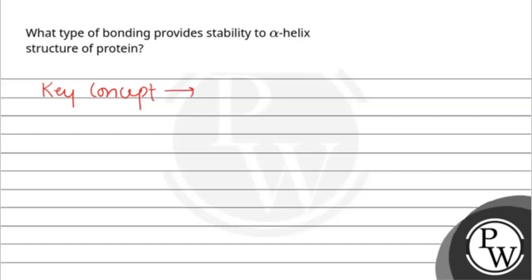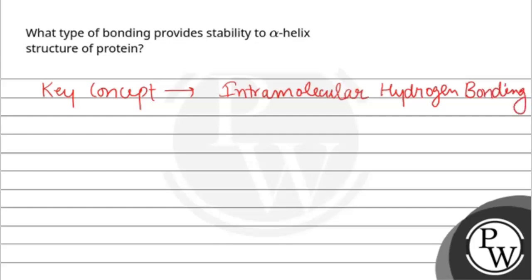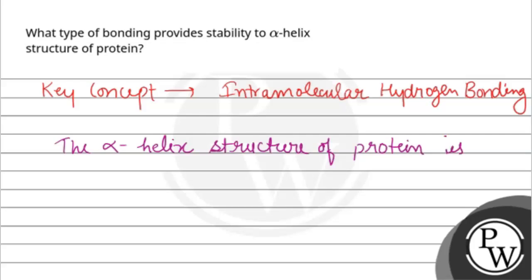The key concept is intramolecular hydrogen bonding. The alpha helix structure of protein is stabilized by intramolecular hydrogen bonding.